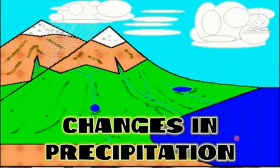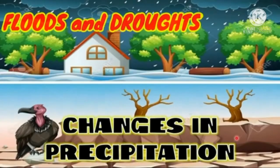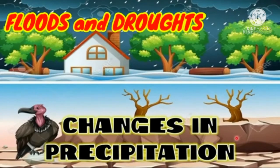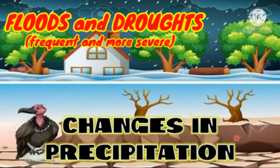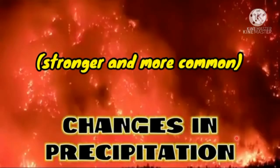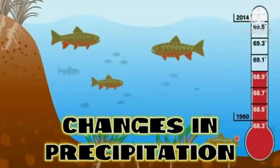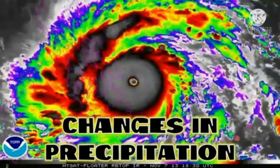Lastly, climate change will alter precipitation. Changes in precipitation patterns will impact people and ecosystems by altering the availability of water throughout the year. The predicted impacts include floods and droughts becoming more frequent and severe, wildfires expected to become stronger and more common, changing ecological processes and species distribution, and severe weather events.